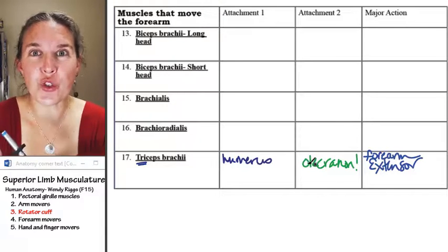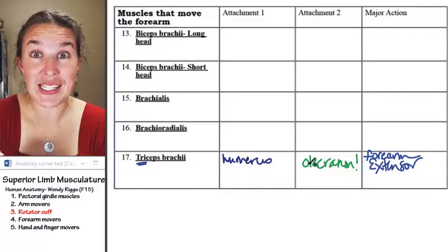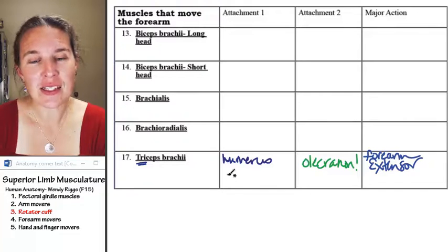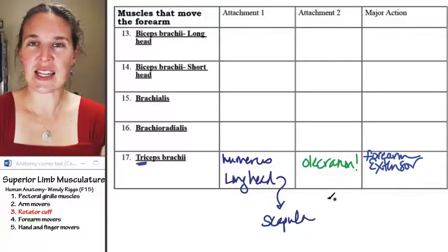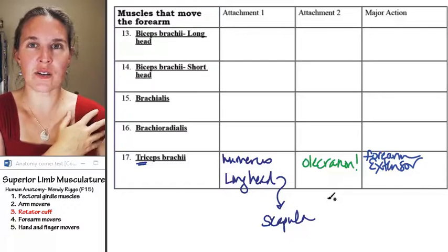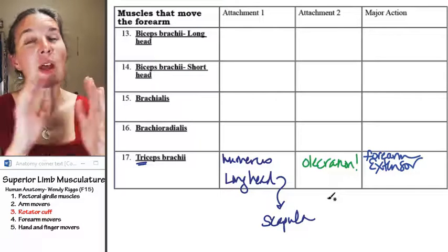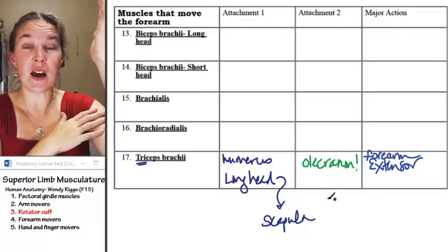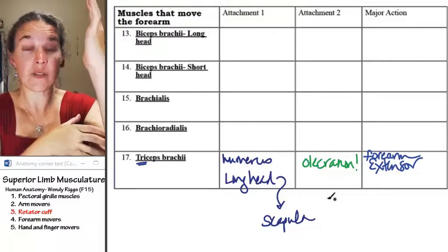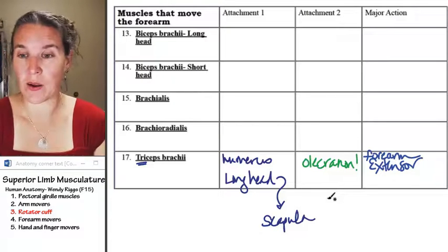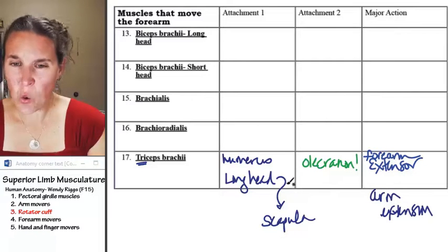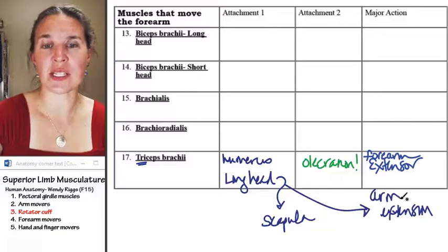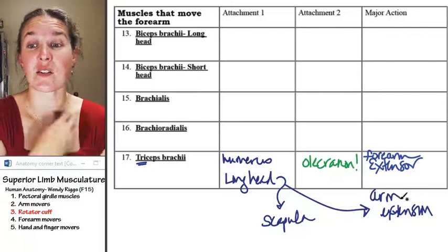But do you remember how I told you there was that one that snaked between teres major and teres minor? That's the long head, and it attaches to the scapula. It attaches to the scapula near the glenoid cavity. And so, because of the long head, we have a little bit of arm movement. We have a little bit of arm extension as well. But that's only the lateral head that's responsible for the arm extension. The rest of the tricep is really just forearm extension.